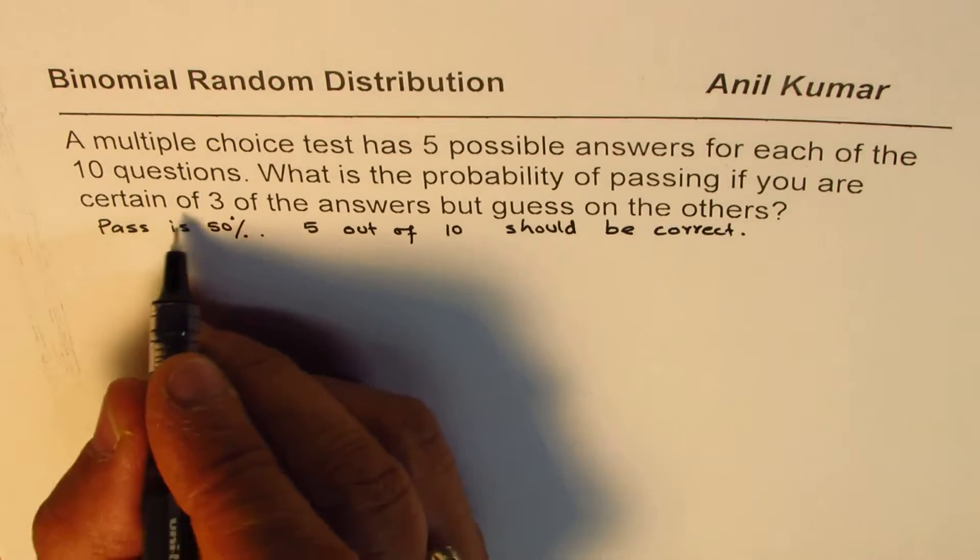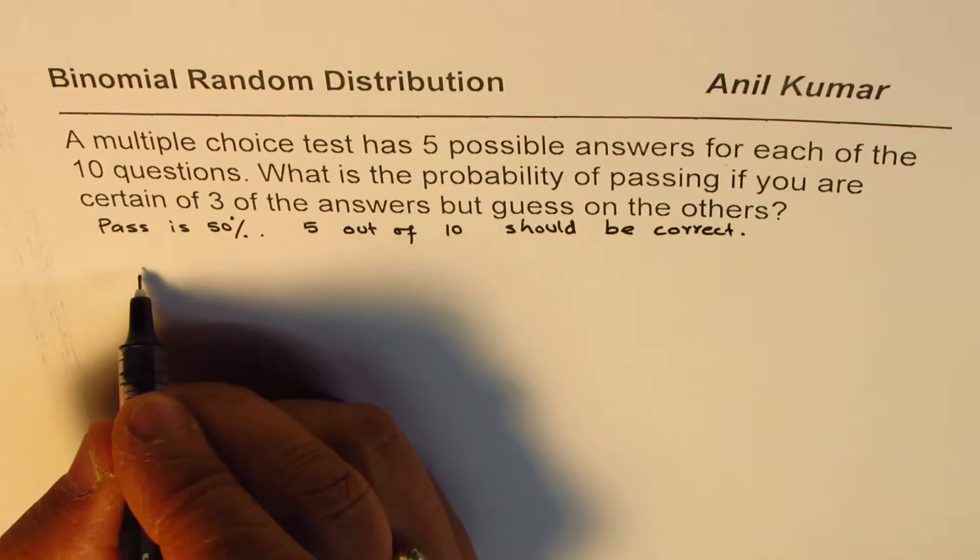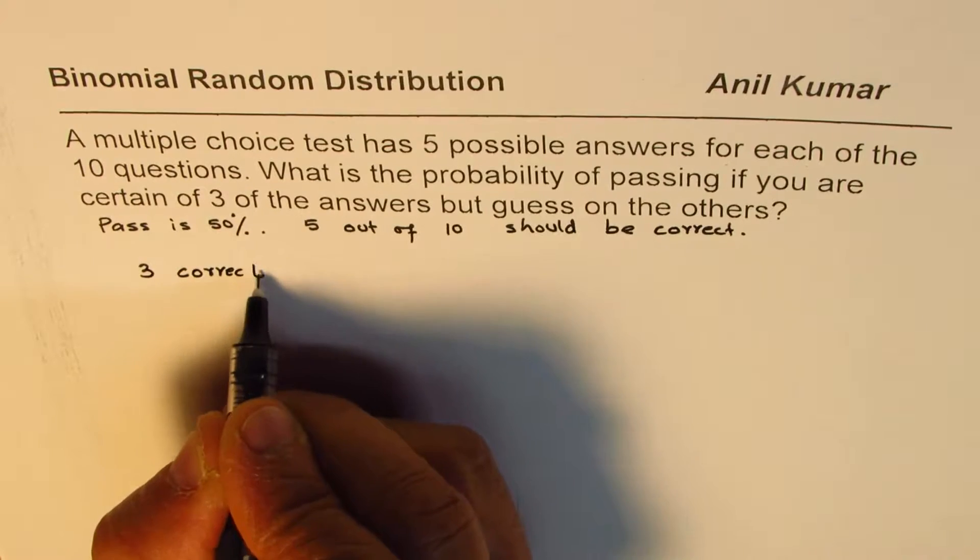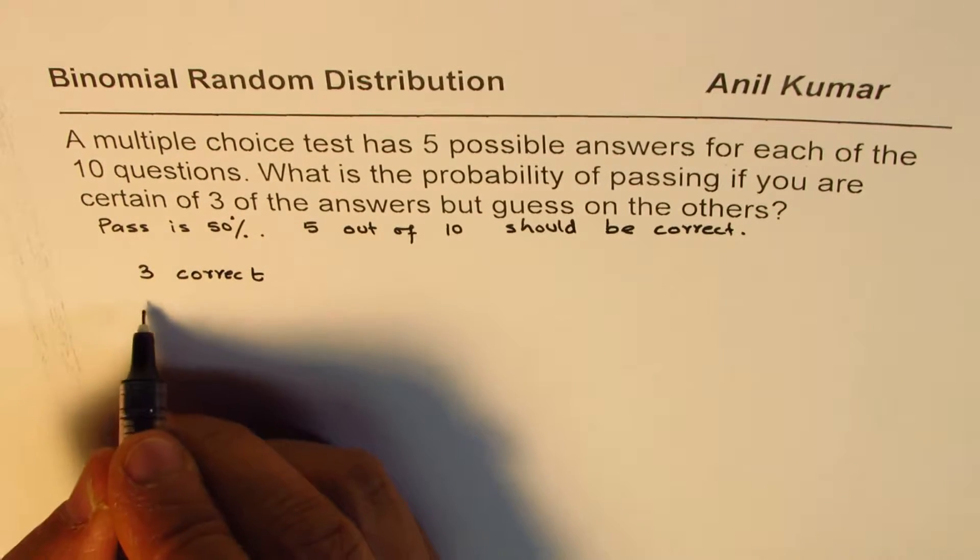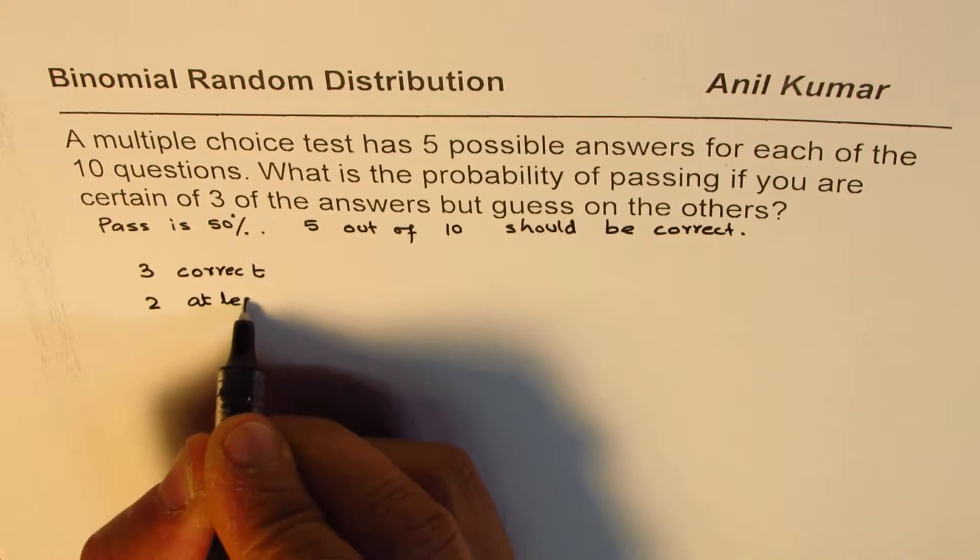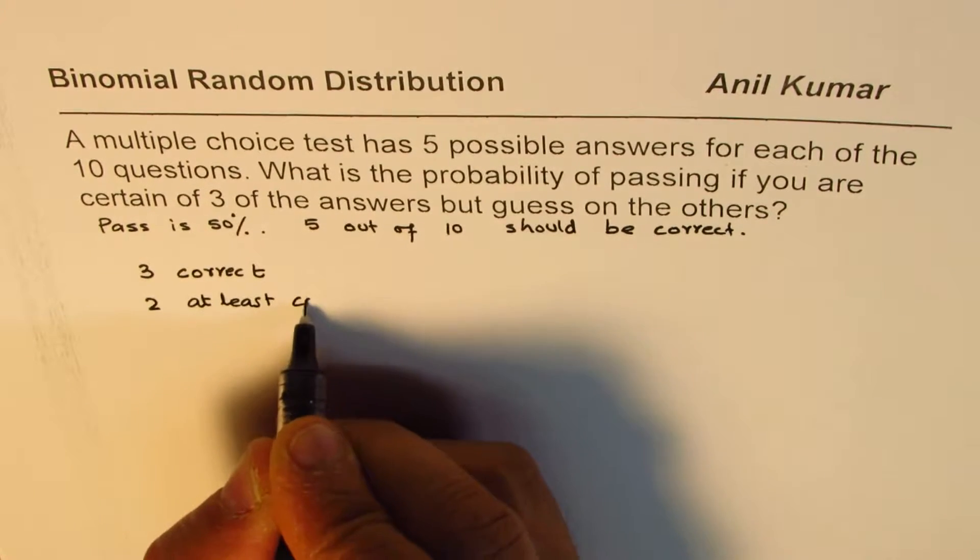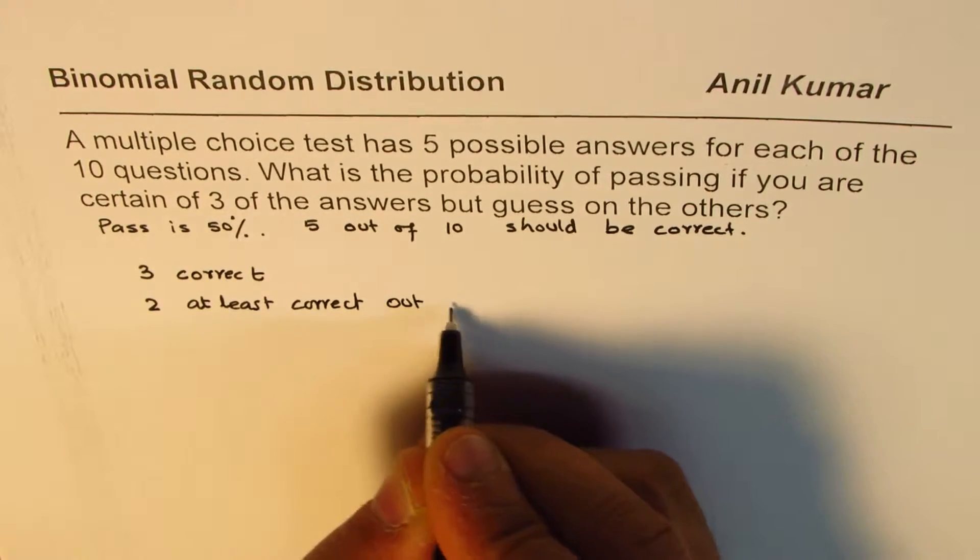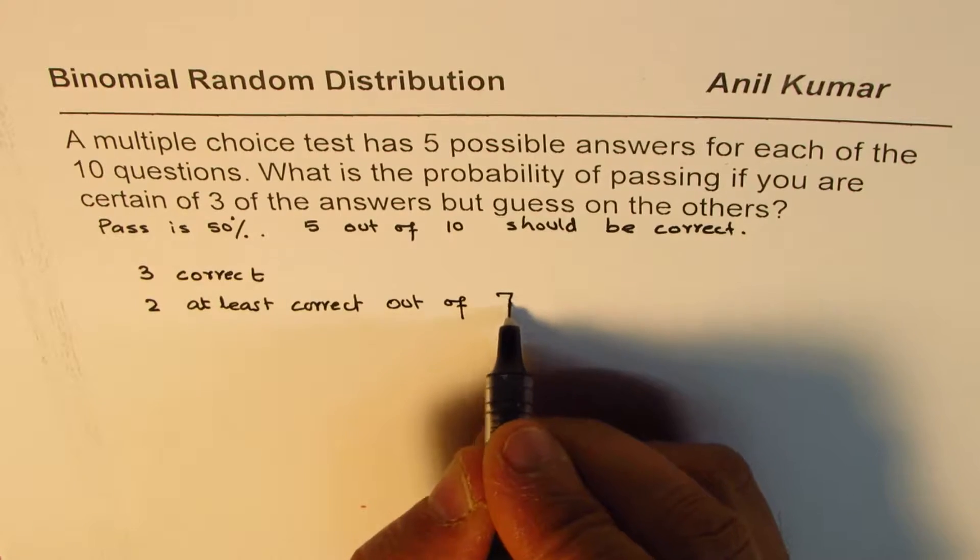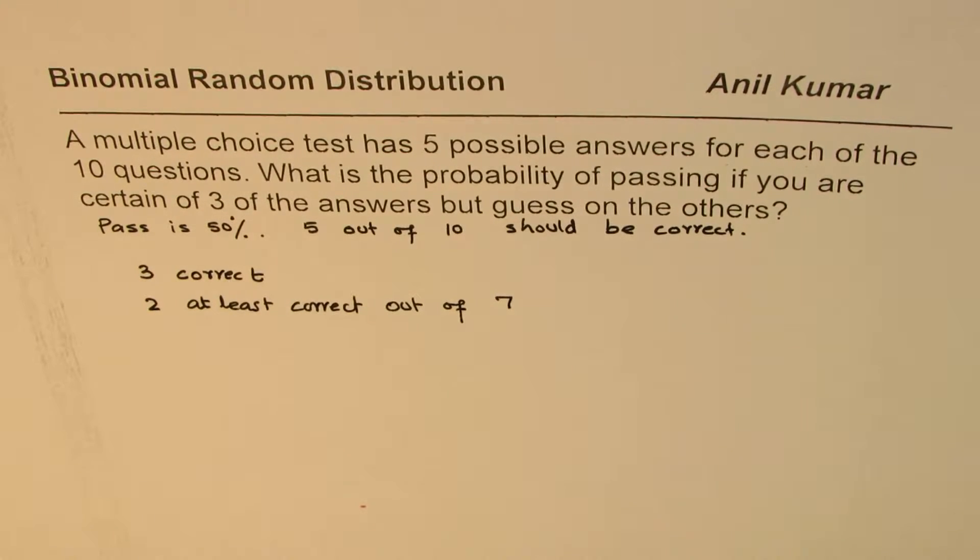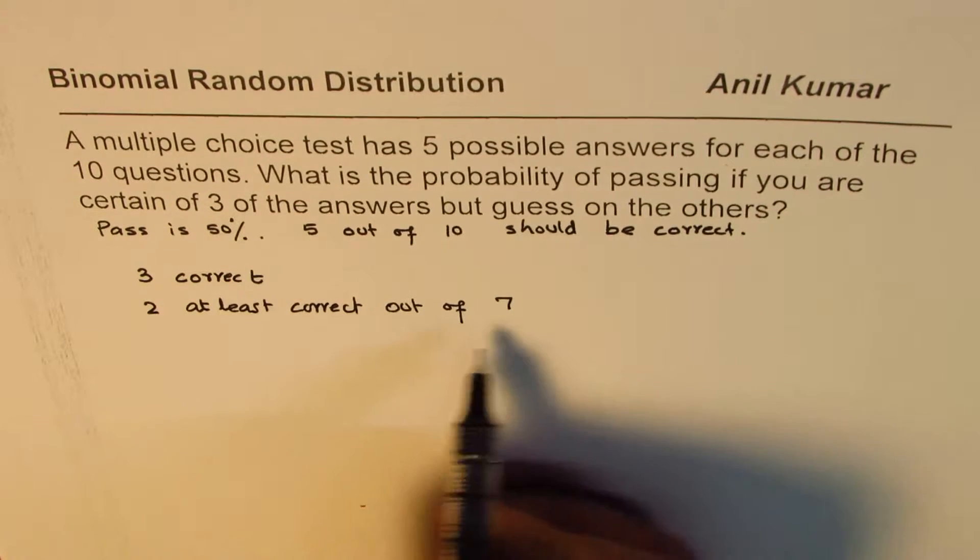So that means if you are certain about 3, that means we already have 3 correct. So we have 3 correct. Now we need total of 5, that means we need 2 at least correct out of remaining 7. Because out of 10 we know 3 for certain. So 2 at least correct out of 7. This is the criteria.